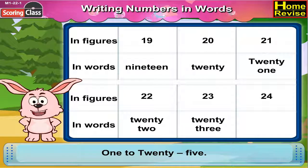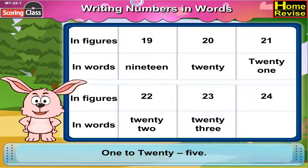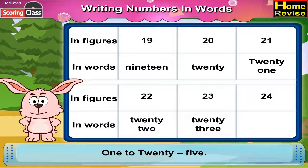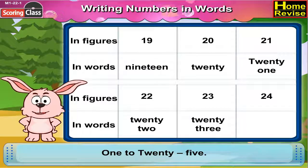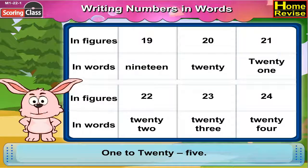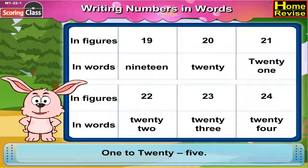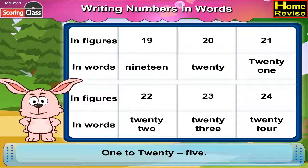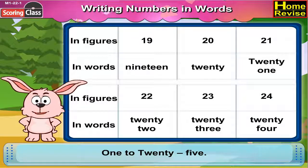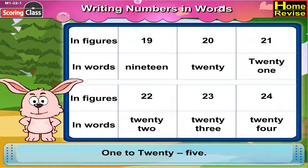24 in figure is 2, 4. In words it is T, W, E, N, T, Y, F, O, U, R.